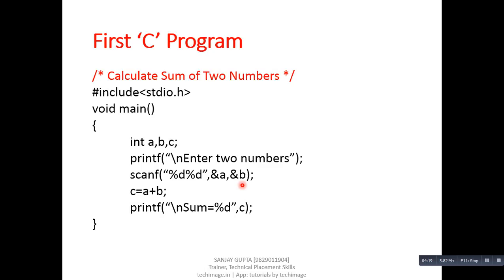Now, c equals to a plus b. This statement is very simple because we have already studied this statement in mathematics. Here, a plus b - the result of a plus b will be assigned into c.